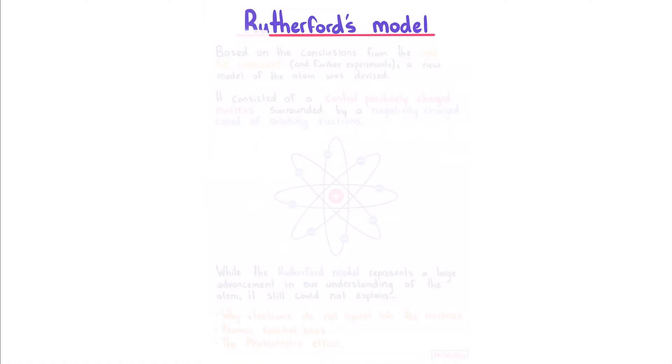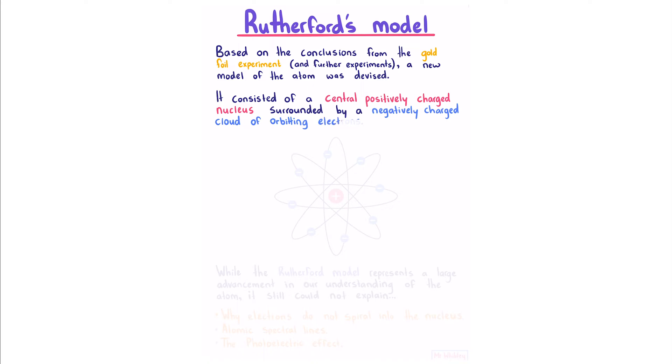Rutherford's model: Based on the conclusions from the gold foil experiment and further experiments, a new model of the atom was devised. It consisted of a central positively charged nucleus surrounded by a negatively charged cloud of orbiting electrons.